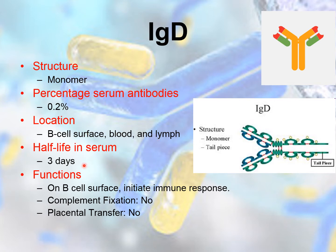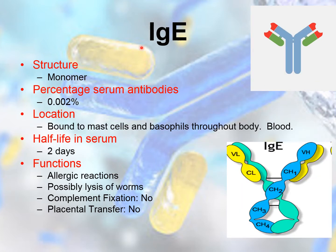IgD has a half-life of about three days. Their major function is as receptors that initiate the B cell immune response. They are not involved in complement fixation and are also not transferred via the placenta.